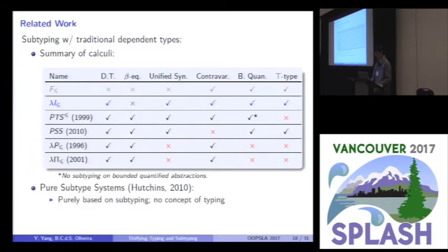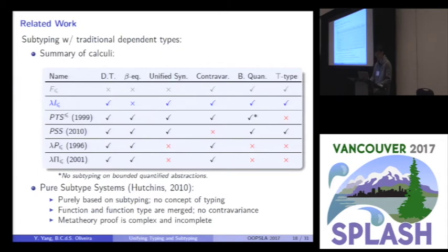And one more recent and interesting work is Pure Subtype System by Hutchins in 2010. It uses the similar idea to be purely based on subtyping. But this calculus is more aggressive. There's even no concept of typing. So, no column in type. In this language, the function and function types are merged. A consequence is that there is no contravariance in this language. And it does not subsume system F sub. And finally, the meta-theory proof of this language is quite complex. And unfortunately, it is still incomplete.